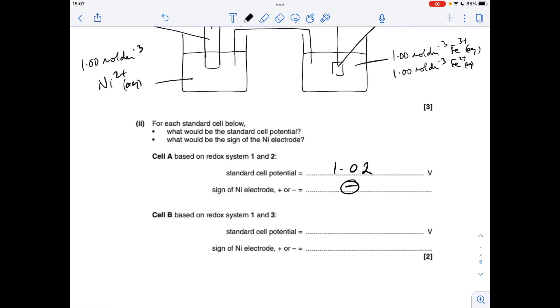Cell B based on systems one and three. So it's the most positive minus least positive for the cell potential. That's -0.25 minus -0.74, which gives 0.49 as a cell voltage. And again, the most positive standard electrode potential is the positive electrode, and this time nickel is the positive electrode.